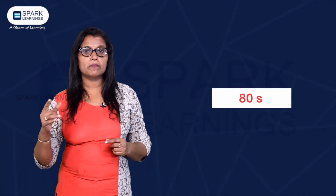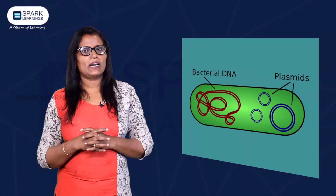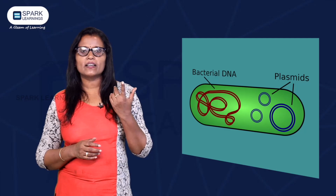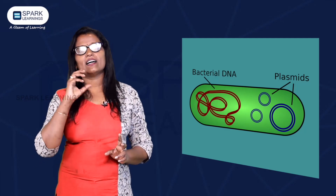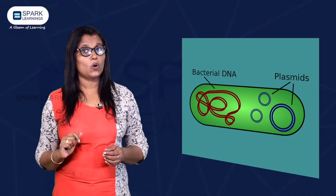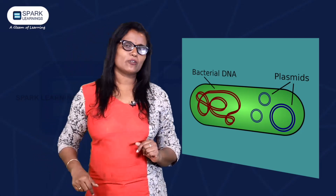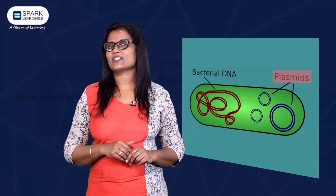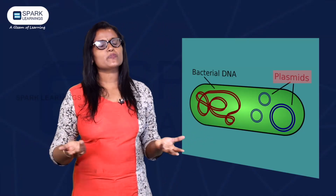Bacterial DNA is circular DNA with a double-stranded helical structure, as opposed to linear DNA. Bacteria also possess an additional DNA called plasmid. Plasmid is also circular. It possesses antibiotic-resistant genes and is an extra-chromosomal DNA in bacterial cells.